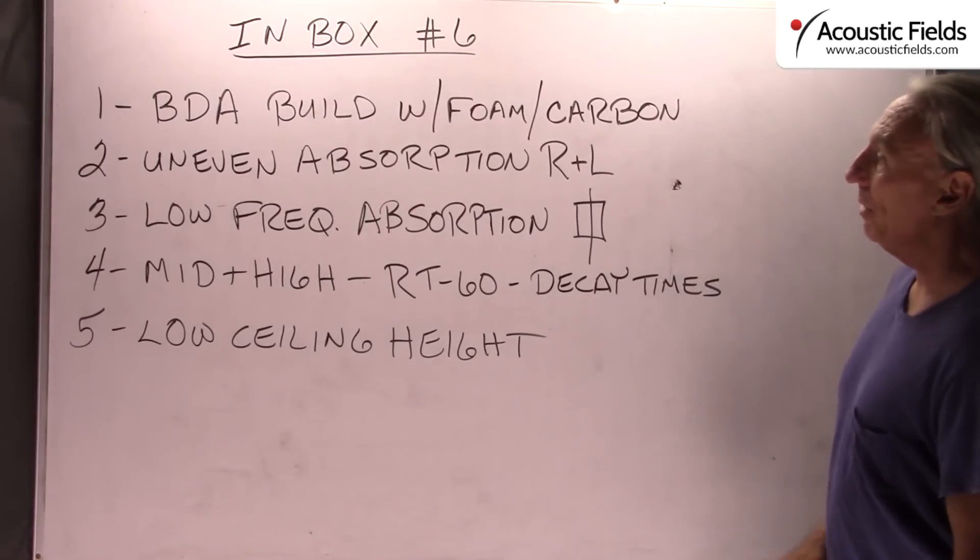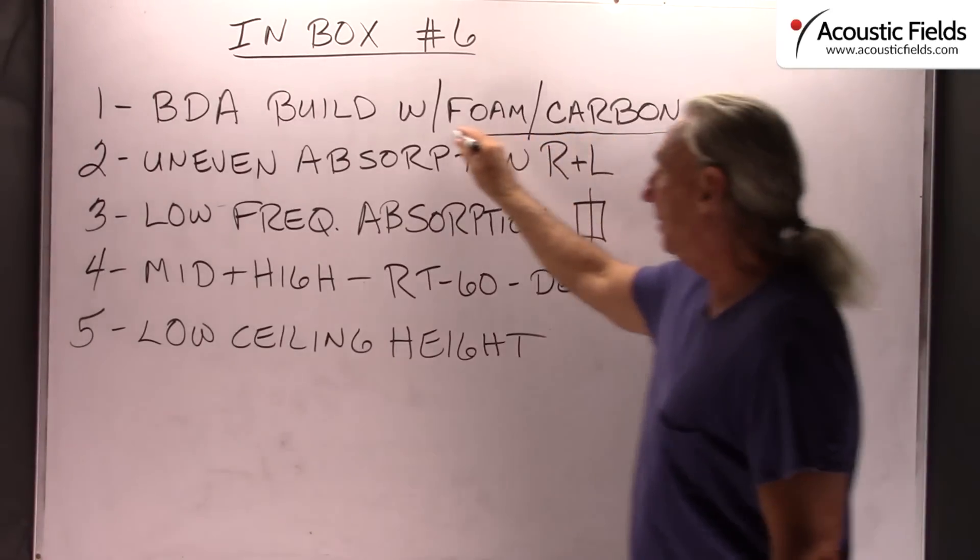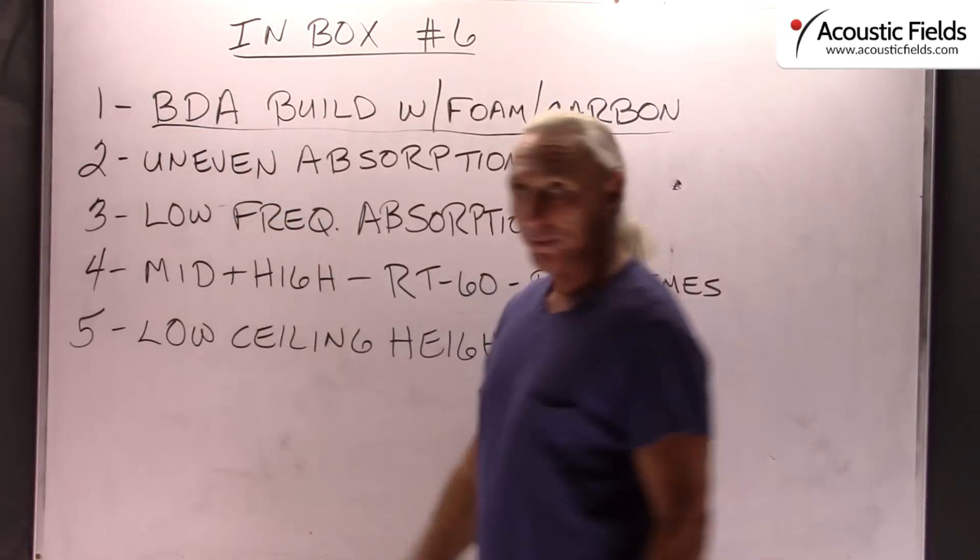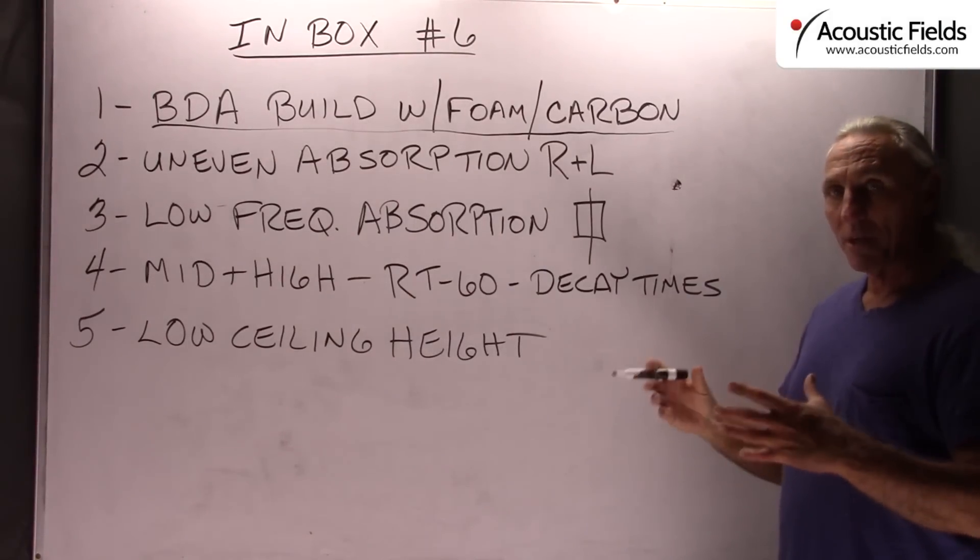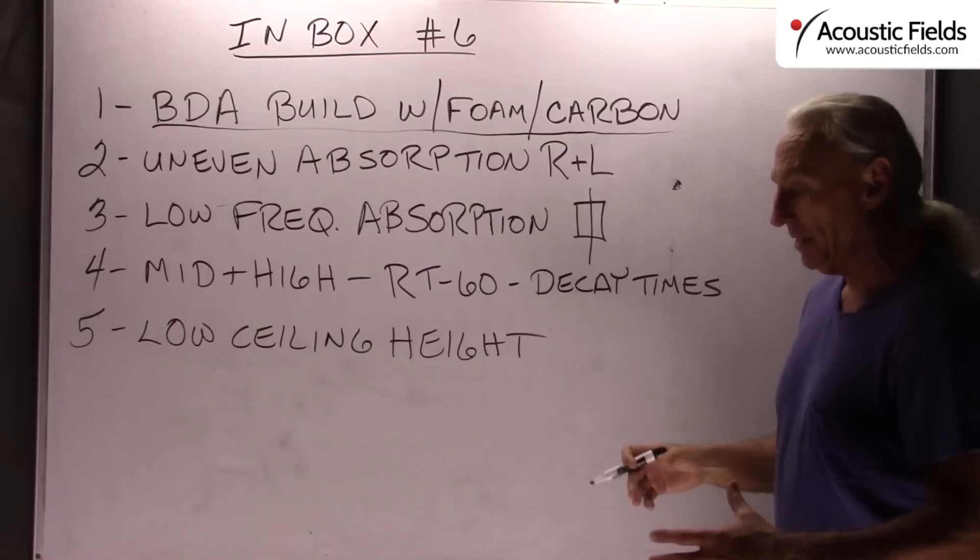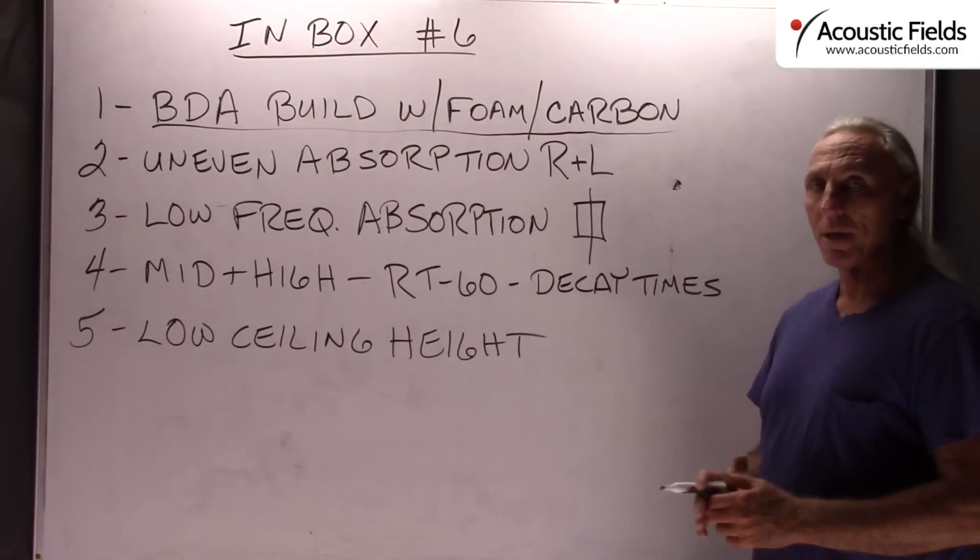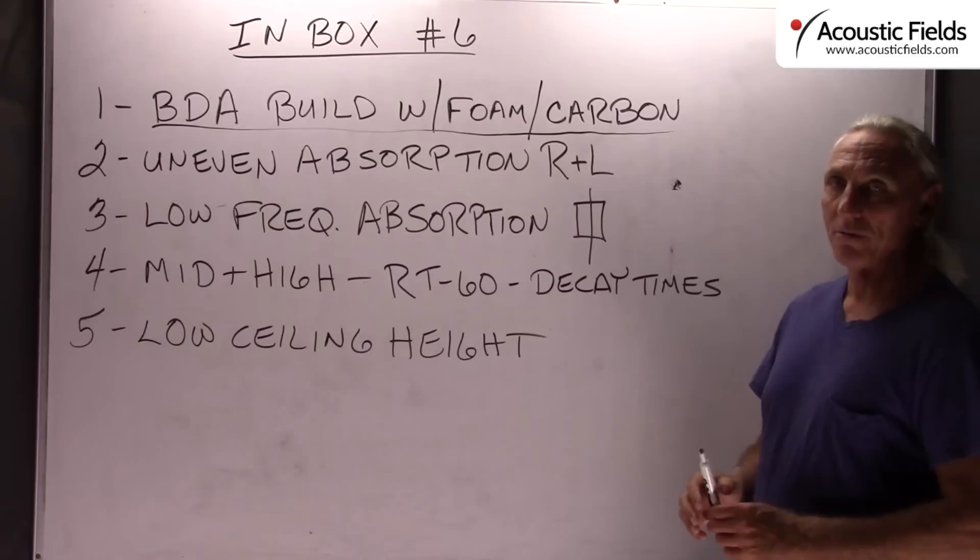The first one we always get is on our BDA build. Now our BDA build comes with two options. Basically in the BDA build, that's our diaphragmatic absorber, and inside the diaphragmatic absorber is a perforated absorber. That's the one with the pegboard that you can see in our videos.